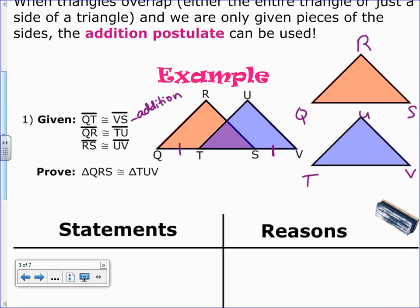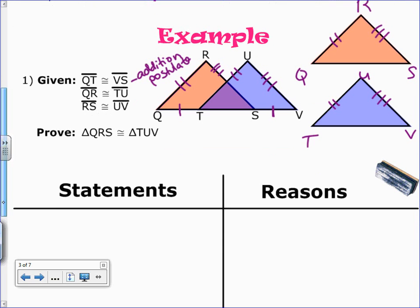We don't have enough. QR congruent to TU, so if you want to see it here as well, QR congruent to TU, that's enough. And RS, that's here, congruent to UV. If we draw it on the ones that are separated, that's here. So that's good too. We have a whole side. But this first one, this QT congruent to VS, we need to use the addition postulate. Let's look at how that would go.